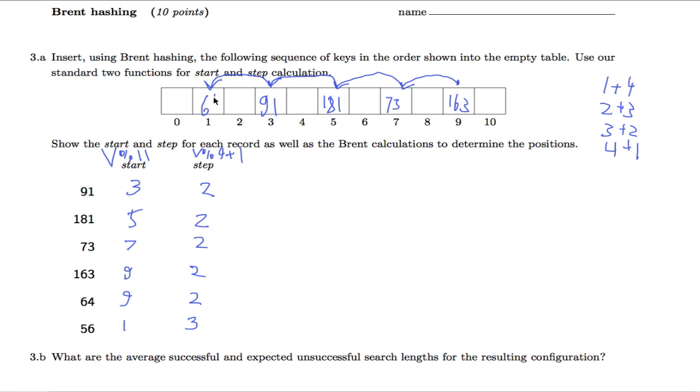Now we're down to 56. 56, now it collides with the 64, and the step is 3. So if we take our 56, it collides here first, then it has a step of 3, so that's 1, 2, 3, it would collide here, and then 1, 2, 3 it would actually land in an open place. That would be 1, 2, 3 probes.